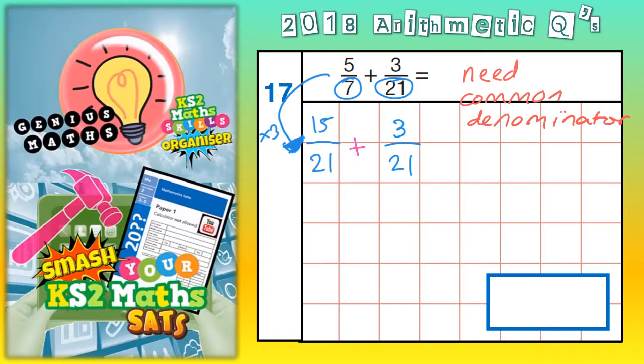Now 15 apples plus 3 apples is 18 apples. 15 oranges plus 3 oranges is 18 oranges. 15 helicopters plus 3 helicopters is 18 helicopters. So 15/21 plus 3/21 is 18/21.